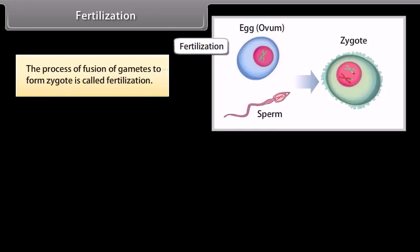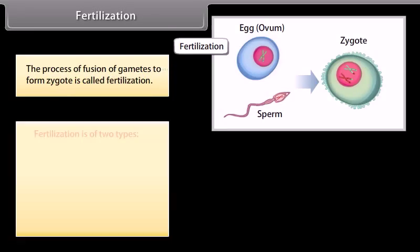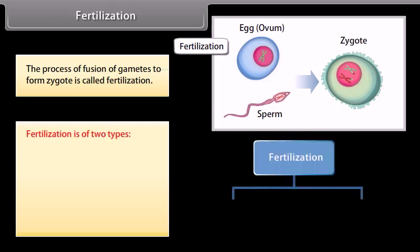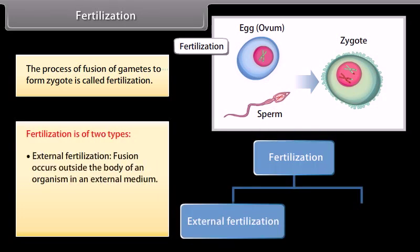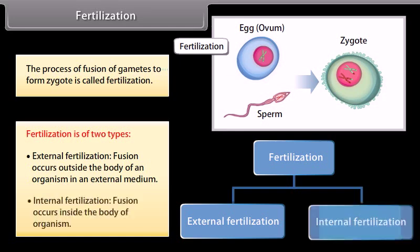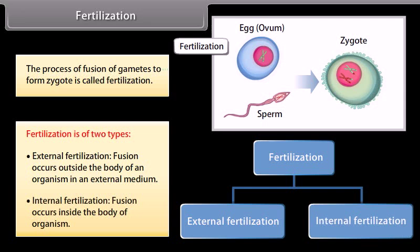Fertilization: the process of fusion of gametes to form a zygote is called fertilization. Fertilization is of two types: external fertilization, where fusion occurs outside the body of an organism in an external medium, and internal fertilization, where fusion occurs inside the body of the organism.